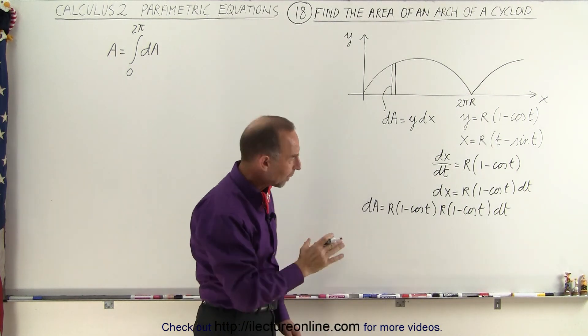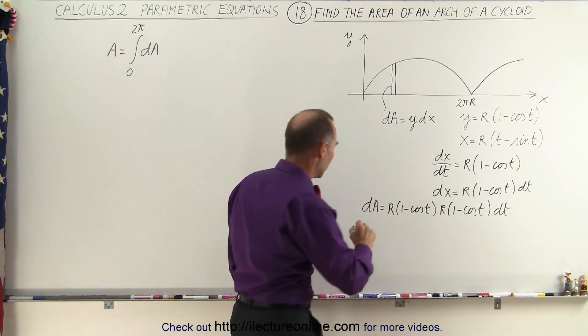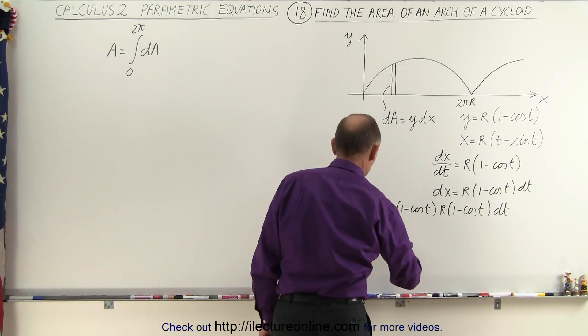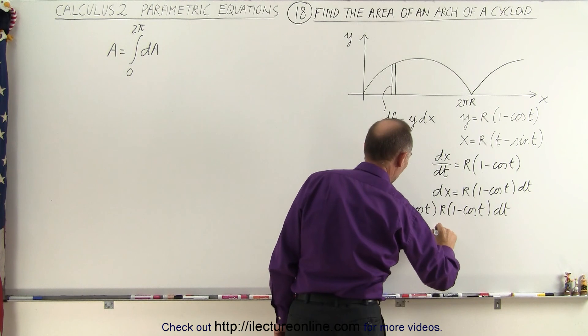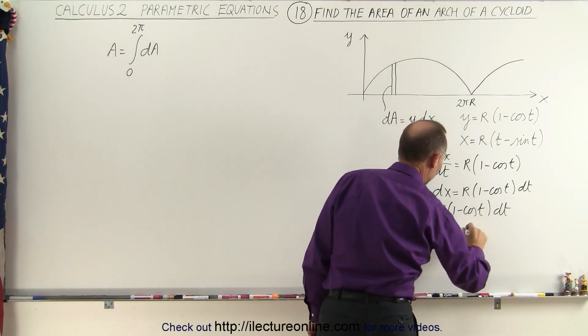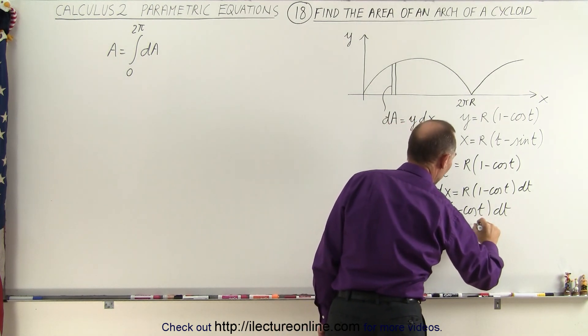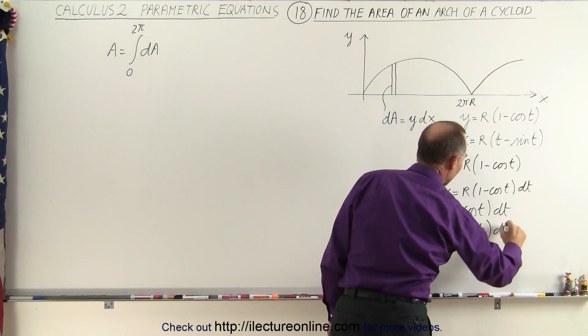Before we do that let's go ahead and simplify it a little bit more. We can say that dA is equal to r squared times 1 minus 2 cosine of t plus the cosine of t squared times dt.